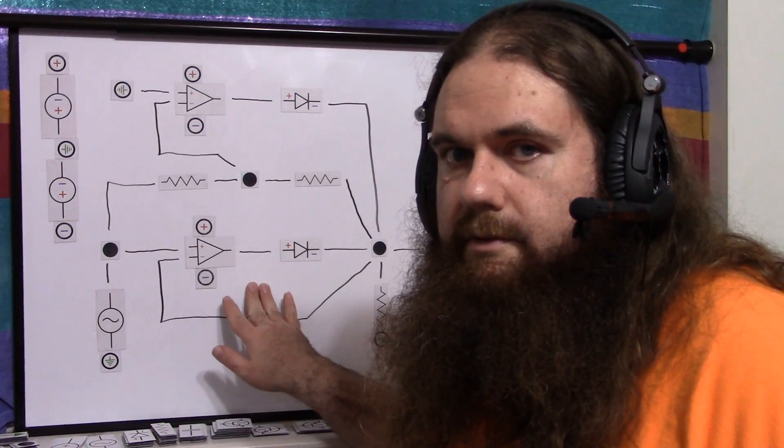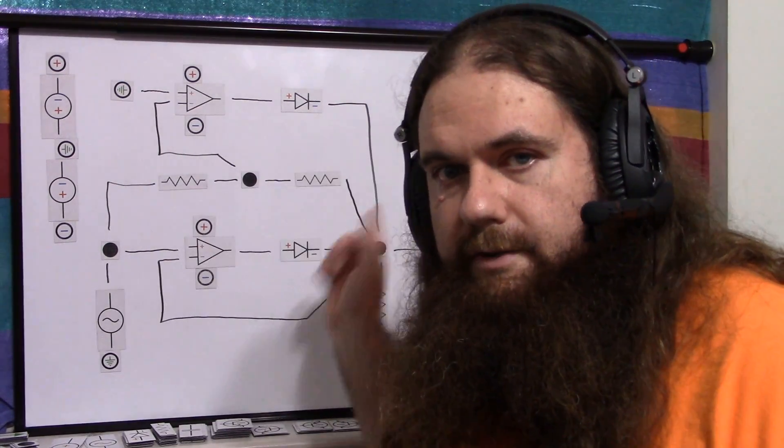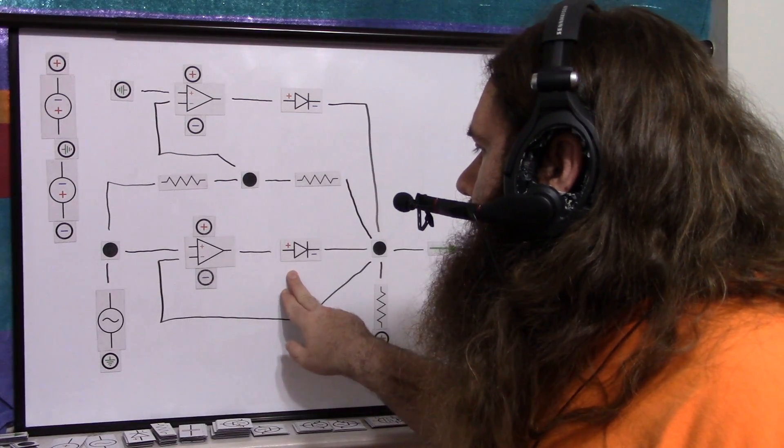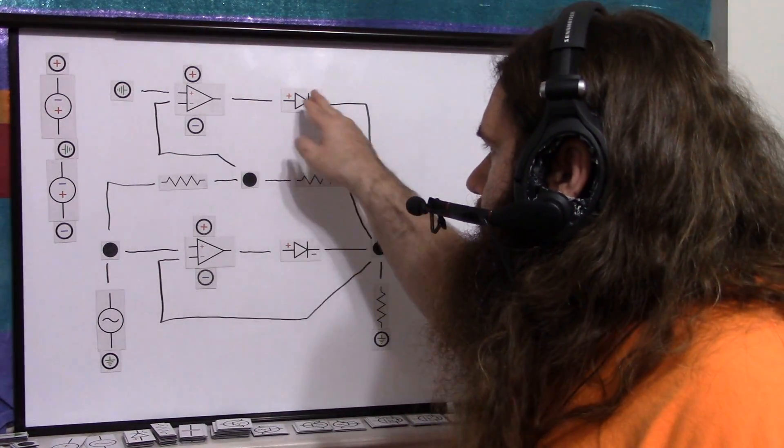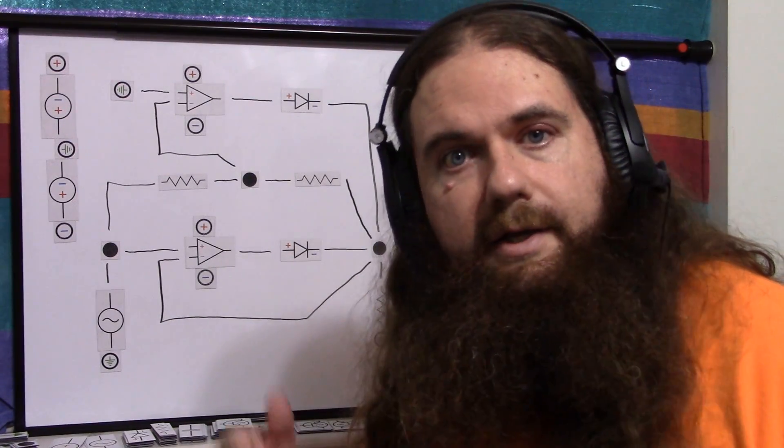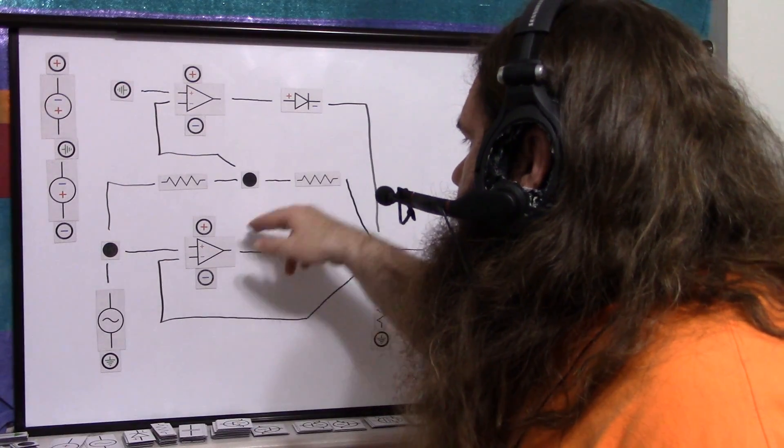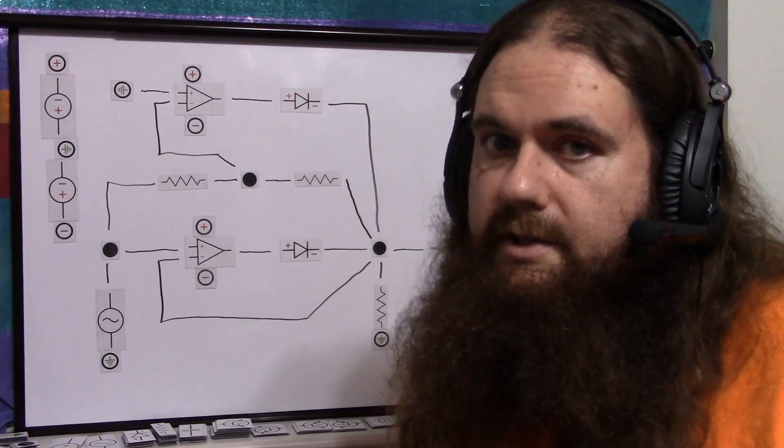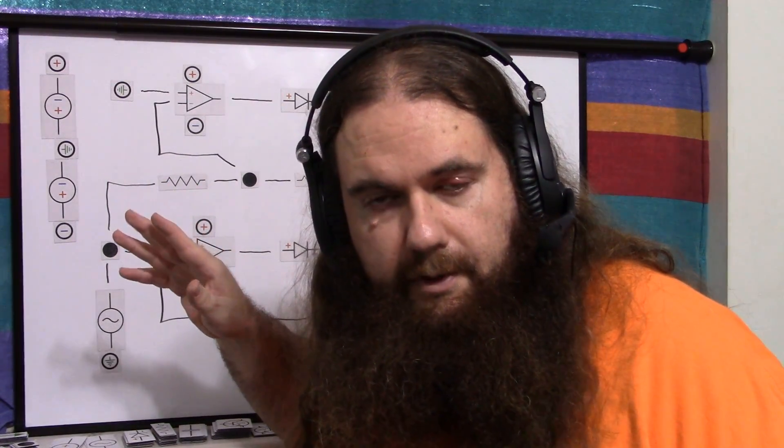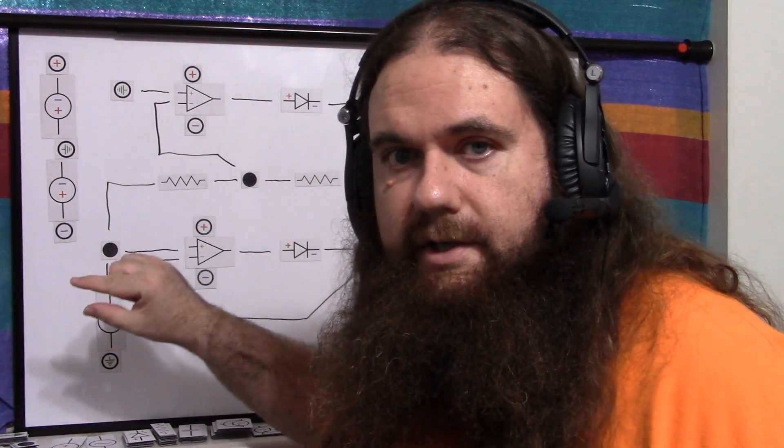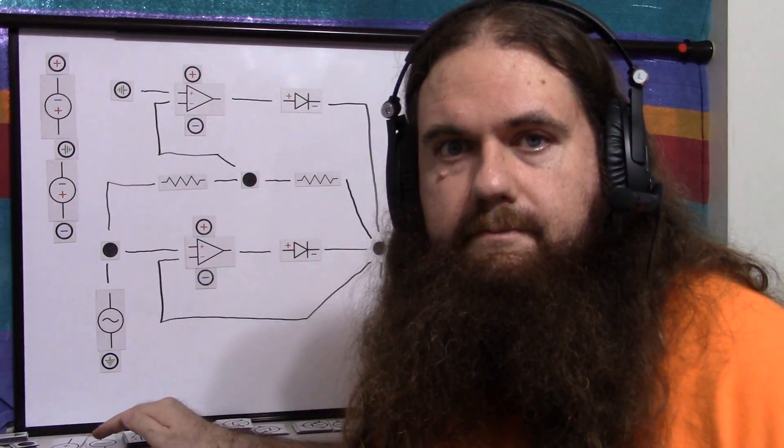So a normal full-wave rectifier is four diodes. In this case, we have three resistors, two diodes, and two op-amps. And my op-amps, cheap as they are, come two on a chip. So one chip, three resistors, and two diodes. Not bad. But there you go. Absolutely perfect, quote-unquote perfect, signal reproduction. Positive is unchanged. Negative is just flipped up to positive. And then you just lose headroom against the rails.